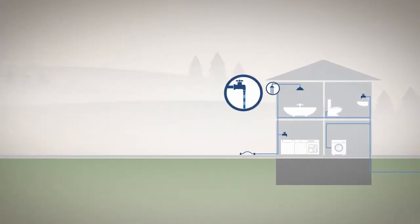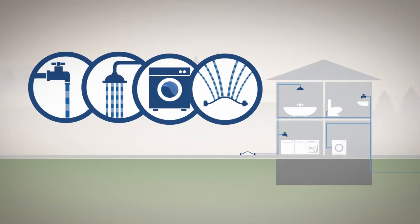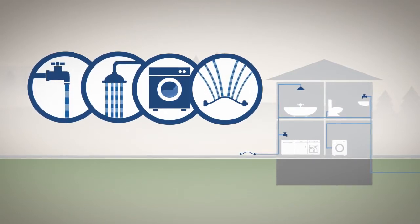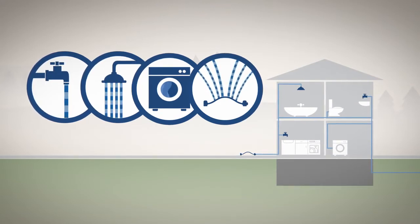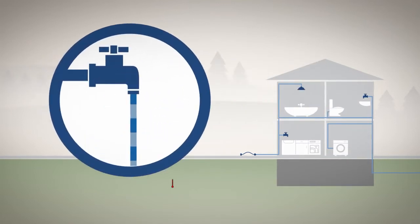The second reason for varying water pressure is multiple taps running at the same time. In a typical domestic water system, every time you turn on a tap—whether it is a shower, a washing machine, or the sprinkler outside—the water pressure will drop.